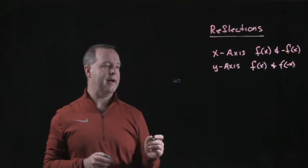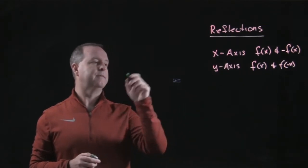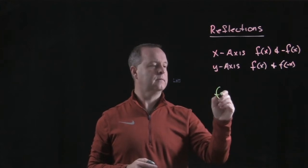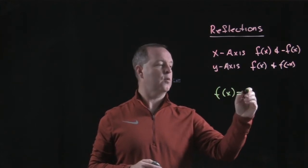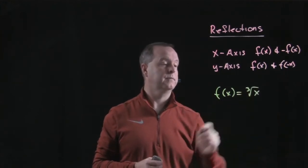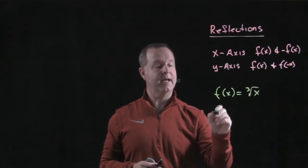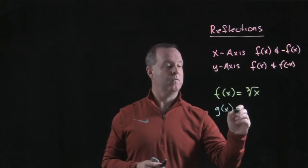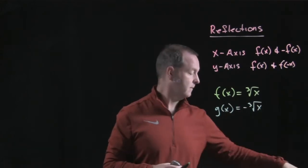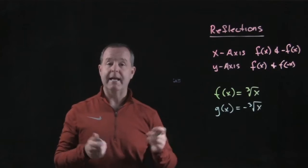Let's imagine that I have some graph f(x) equals the cube root of x. And from that, I want to obtain a second function which is that function's negative.